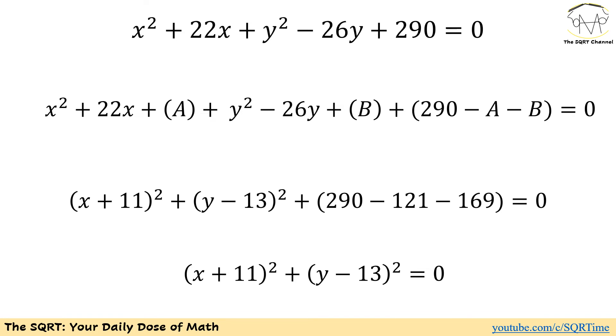Finally we have 290 as a constant term and we need to subtract what we have for A and B here. Now we have x² and 22x. Obviously 2 times x times a constant is going to be 22.